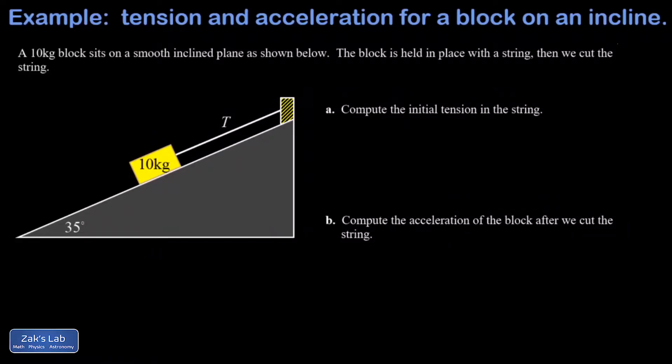In this problem we're given a 10 kilogram block sitting on a smooth inclined plane. Initially it's not going anywhere because it's held in place with a string, and that string is parallel to the surface of the ramp. Then for the second part of the problem we cut the string and ask how fast the block accelerates down the ramp.